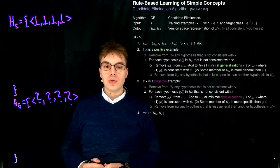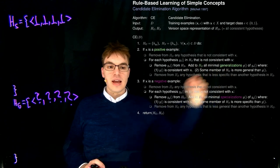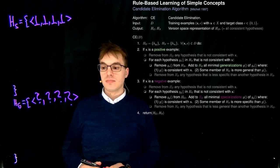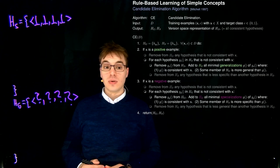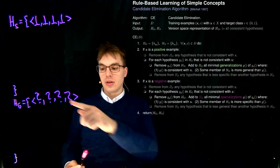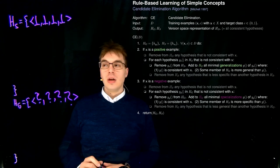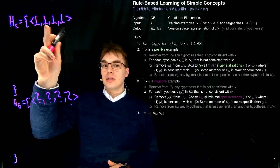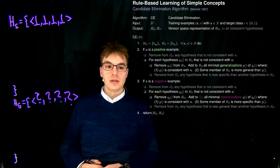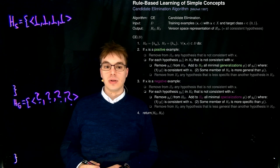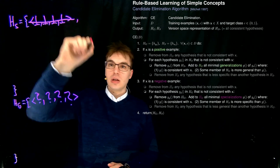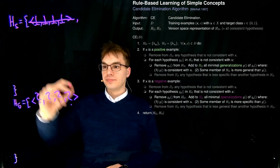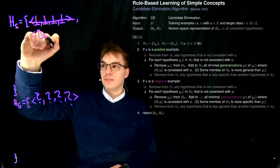First, we remove from HG any hypothesis that is not consistent with X. Since all wild cards admit our example, and it is also award winning, this hypothesis is consistent with our example, so we leave it. Then we consider each hypothesis in HS that is not consistent with X. The maximally specific hypothesis is never consistent with any positive example, so we erase it and add the consistent example — we simply take the full example and add it here.